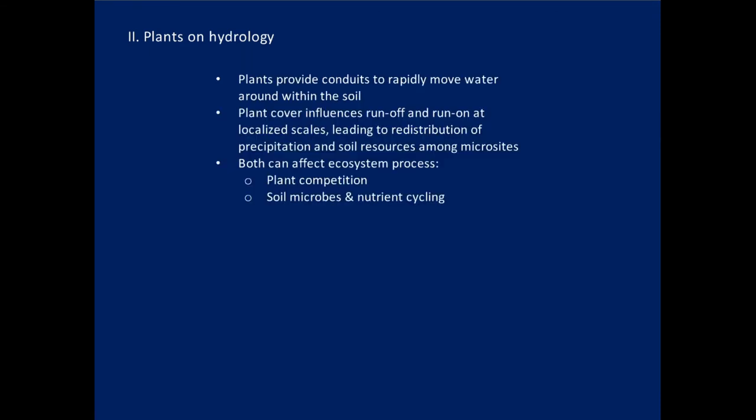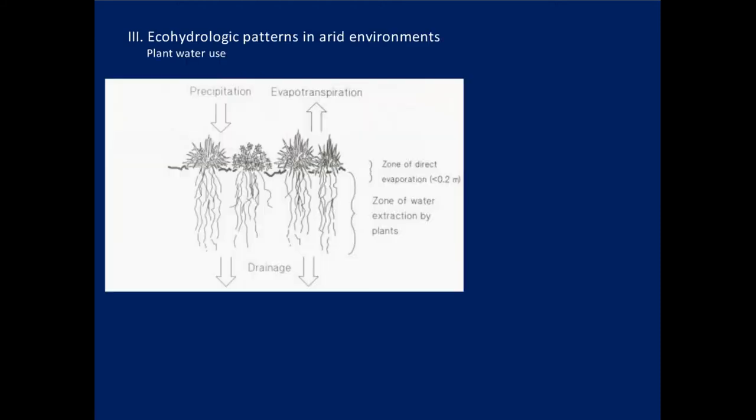To summarize how plants can affect the hydrologic cycle: plants provide conduits to rapidly move water around within the soil; plant cover in vegetation patches influences runoff and run-on processes, especially at localized scales that build up across the landscape; and this leads to redistribution of precipitation and soil water resources among microsites — concentrating them where there's vegetation and depleting them where there isn't. This scales up to competitive relationships among plants and nutrient cycling.